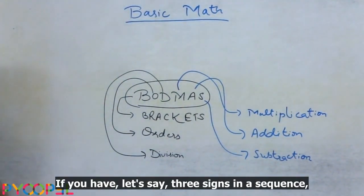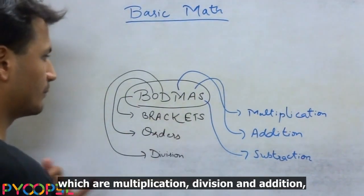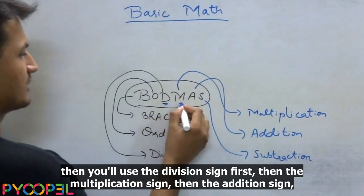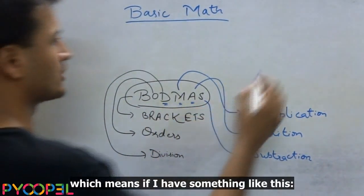If you have let's say three signs in a sequence which are multiplication, division and addition, then you will use the division sign first, then the multiplication sign, then the addition sign.